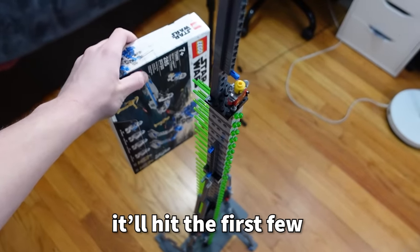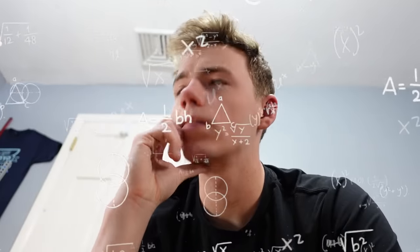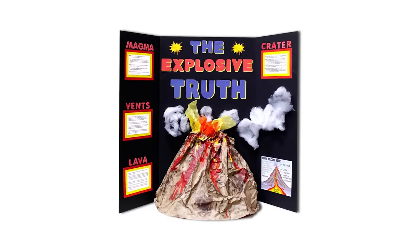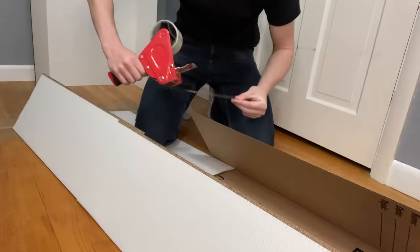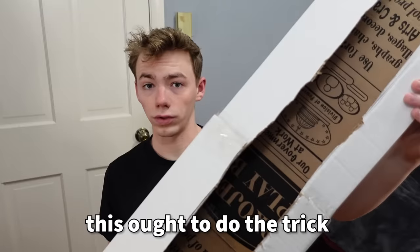I'm starting to get a little irritated, if I'm being honest. Whenever I drop it, it'll hit the first few, and then just miss the rest. I would have to find a more creative solution to solve this problem. So I picked up some poster board and built a shaft that would help guide the box in a straight line every time. This ought to do the trick.